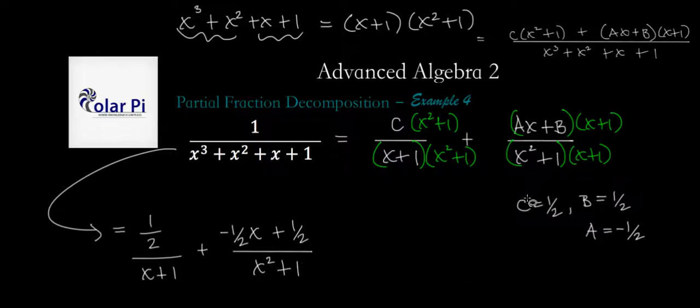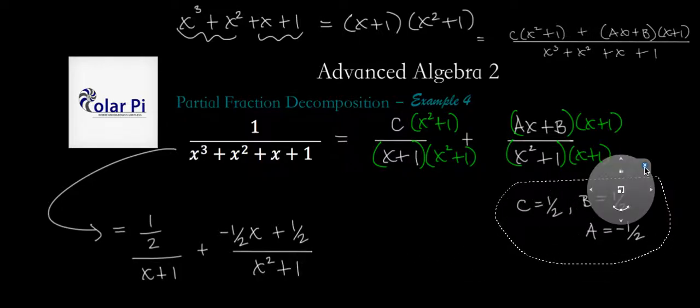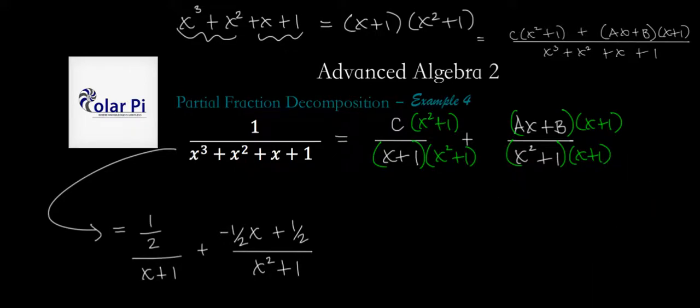Well, if you want, you can write this a little bit cleaner, because of the convenience of having all of these coefficients here in the numerators being one half. And so what you could do is like write one half, and then write one over x plus one, and then it could be plus one minus x, or negative x plus one over x squared plus one.